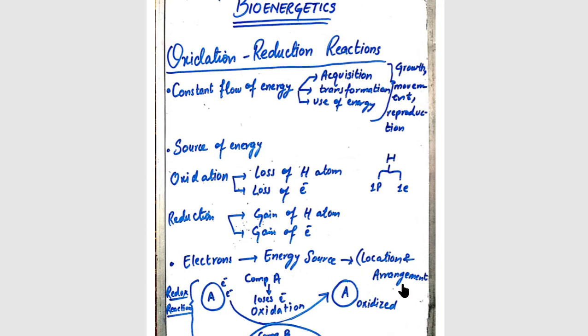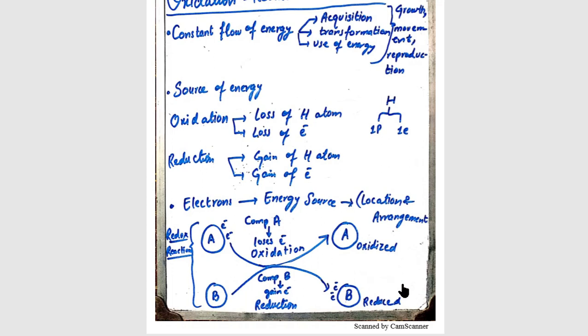The second factor is the arrangement of electrons. For example, in an oxygen atom, the electrons are tightly bound to the nucleus by electrostatic force of attraction — so oxygen's electrons don't easily leave. However, in a molecule where oxygen is bonded with carbon or hydrogen, the electrons in C–H bonds are more loosely held and can be transferred. The arrangement within a compound determines how easily electrons can be moved in redox reactions.